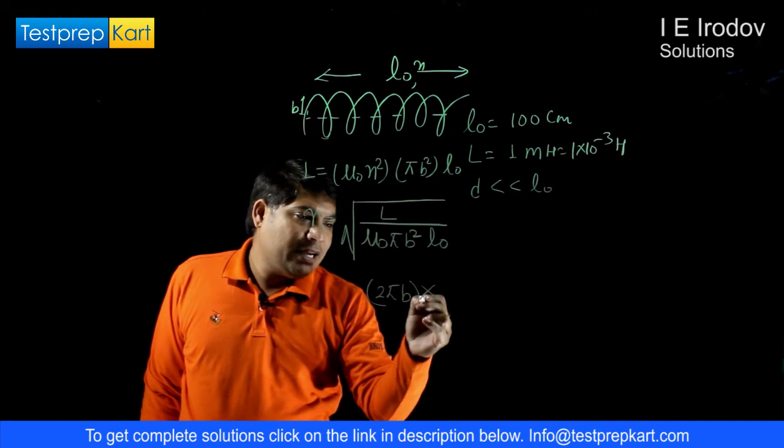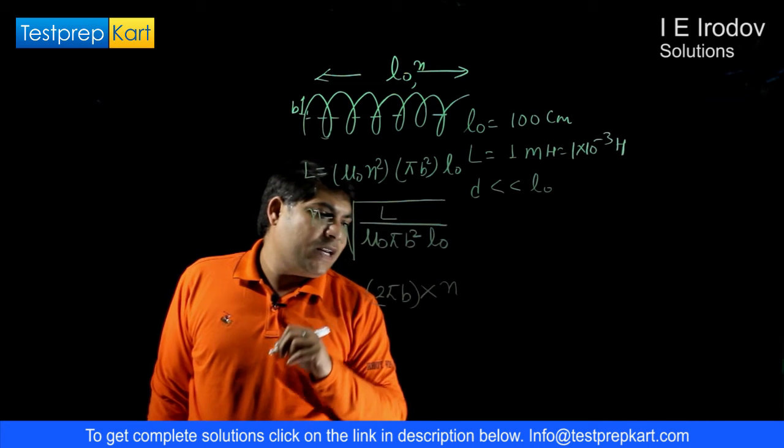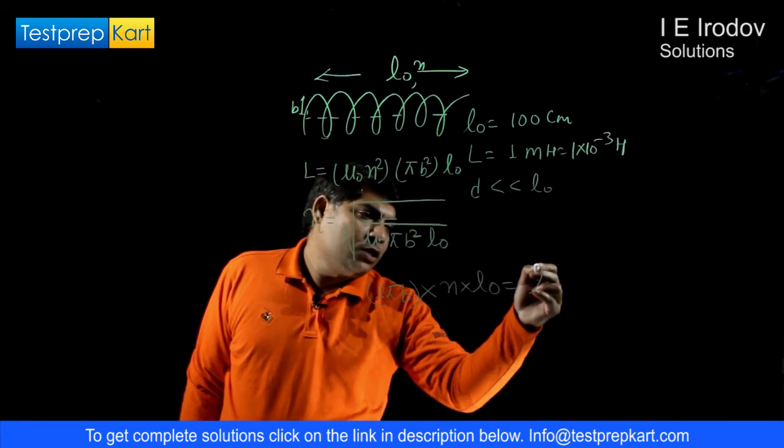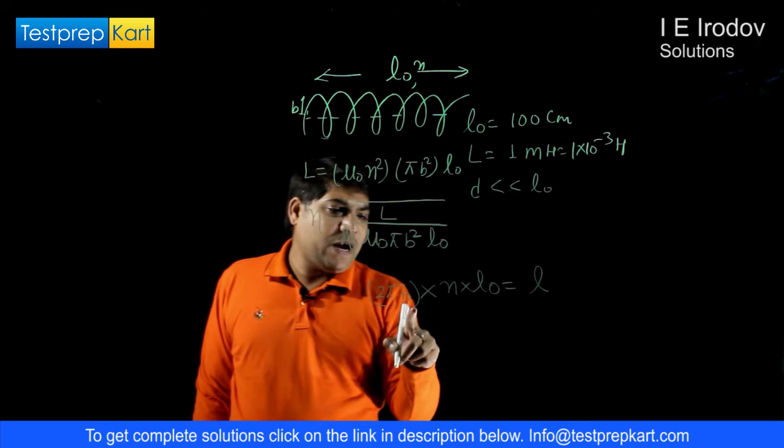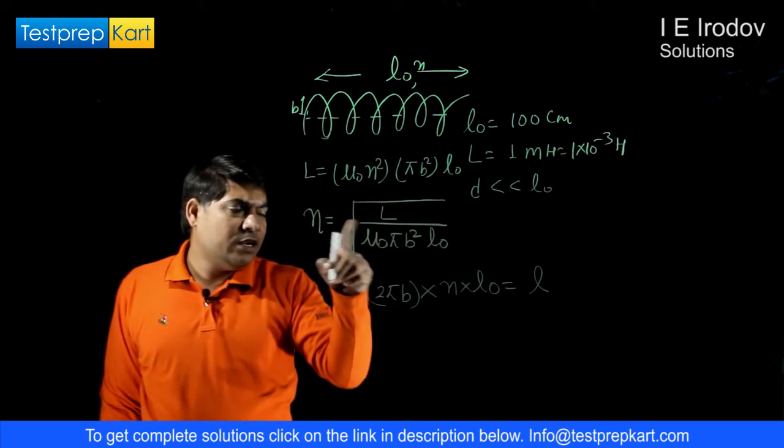Multiplied by total number of turns, so turn per unit length is n and total number of turns is nL₀. Total length of conductor is 2πB × n × L₀.